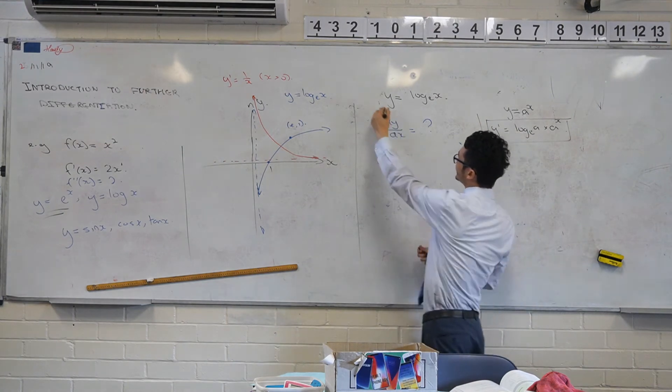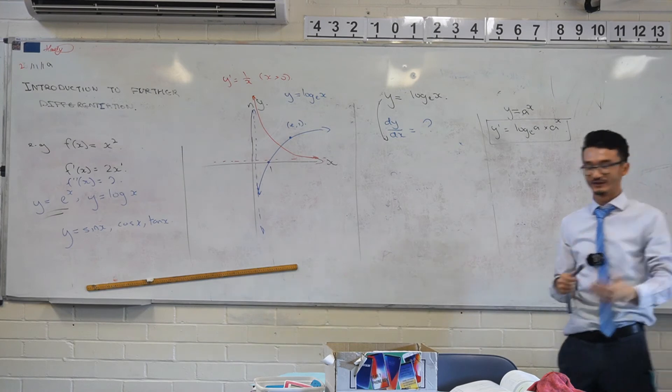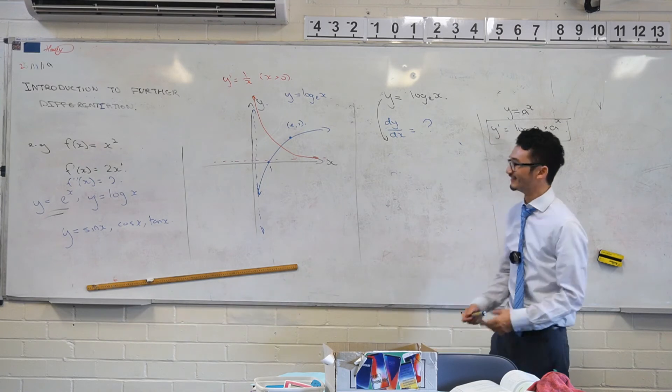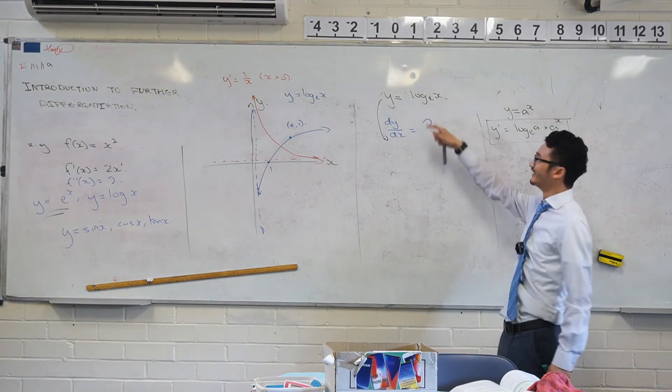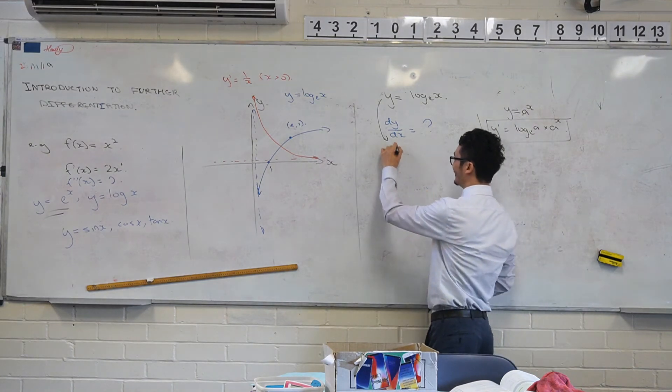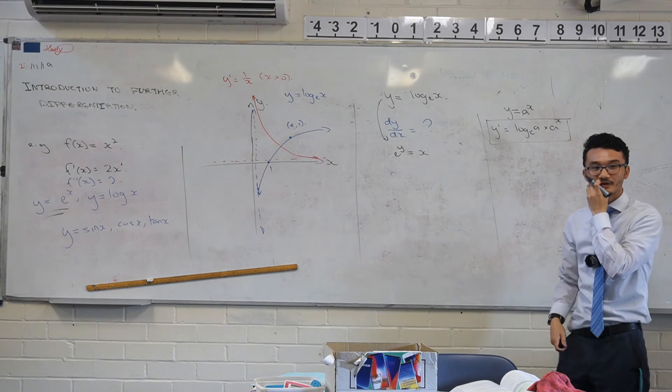The way we can do it is you take this function and you rewrite it in exponential form. Go back to things that you can find the derivatives of. X equals E to the Y. So the base is always the base. The result is the power, and then you go from there. So E to the Y is equal to X. Remember, they are inverse functions.